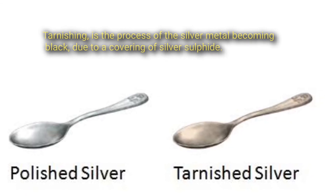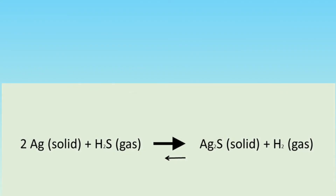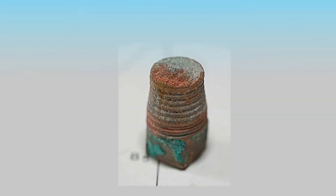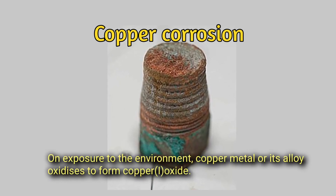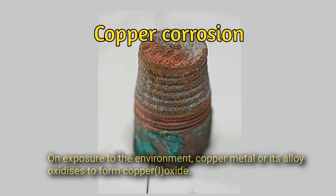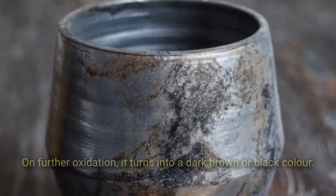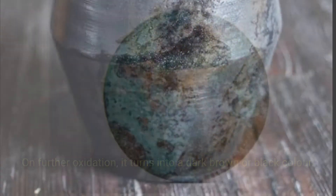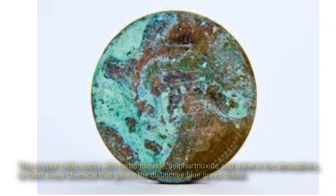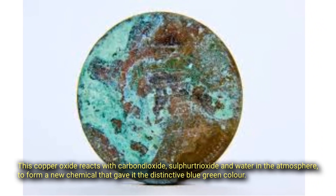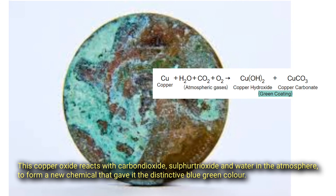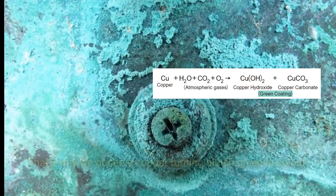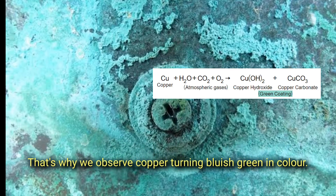Copper corrosion: on exposure to the environment, copper metal or its alloys oxidize to form copper(I) oxide. On further oxidation it turns into a dark brown or black color. This copper oxide reacts with carbon dioxide, sulfur trioxide, and water in the atmosphere to form a new compound that gives it a distinctive blue-green color — which is why we observe copper turning bluish-green.